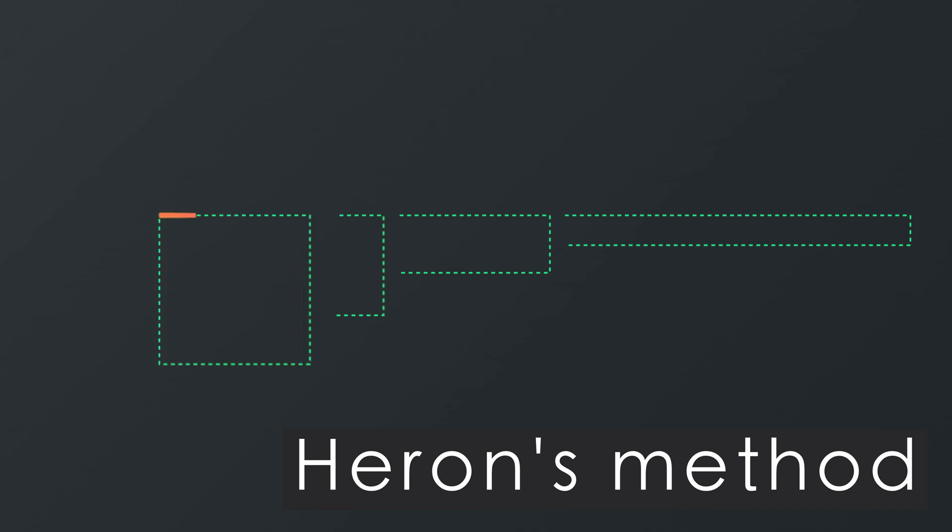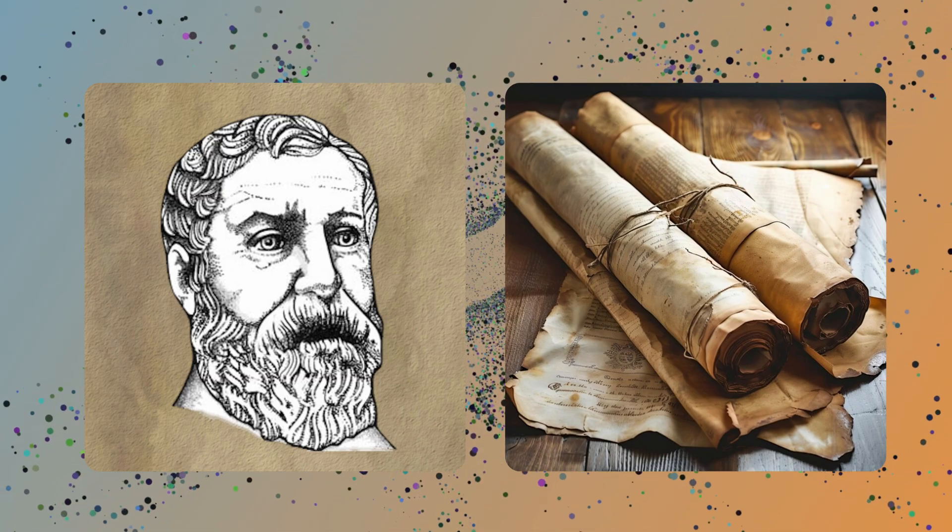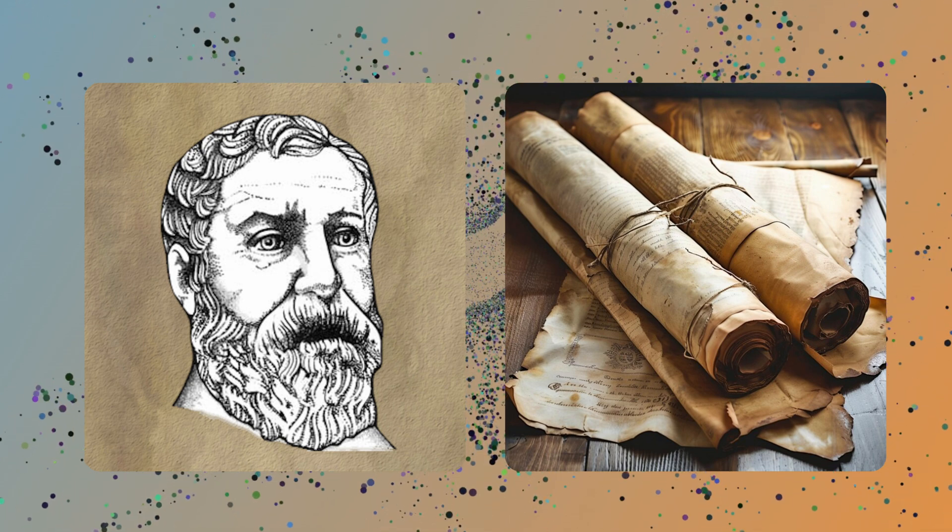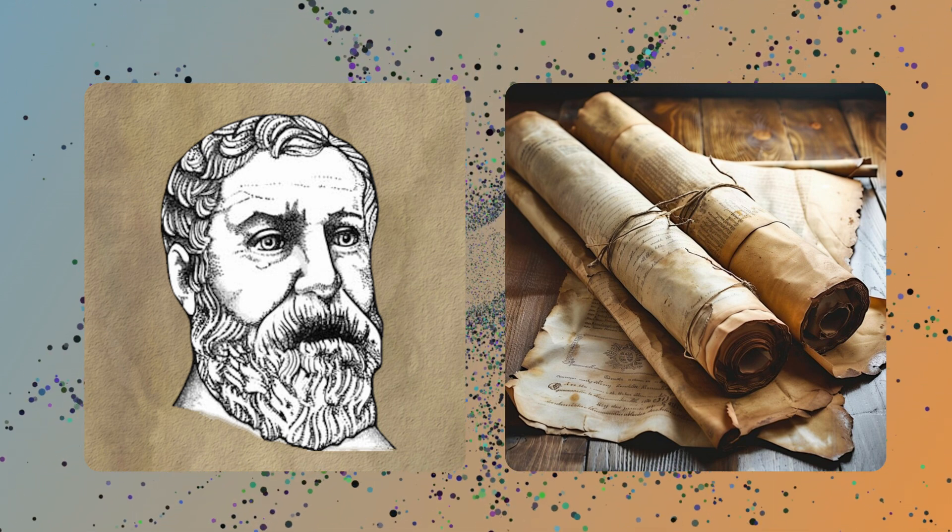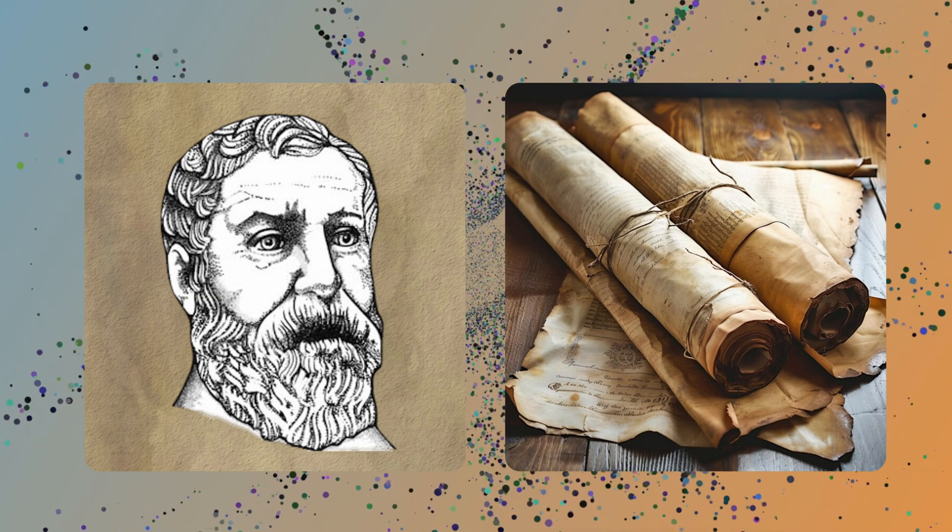Today we will witness pure elegance when we investigate the Heron method, also called the Babylonian method. It is named after Heron of Alexandria, a Greek mathematician. In his book Metrica, he introduced a way to retrieve the square root of a number in an iterative manner.